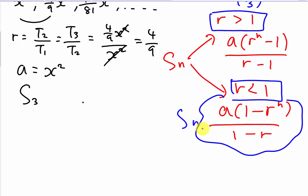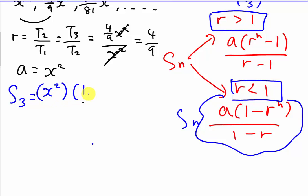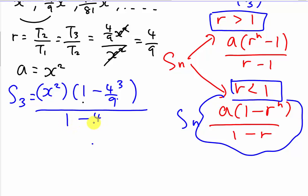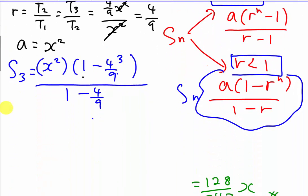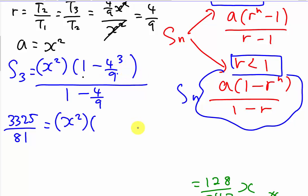S3 equals — I'm going to substitute everything in. My A is x squared, and then 1 minus my R (which is 4/9) power of N — N is 3 — over 1 minus 4/9. I know my sum of the first 3 terms. Let me solve this algebra. The x squared remains, and this one — 1 minus 64 over 729 — over this, which is 5 over 9.